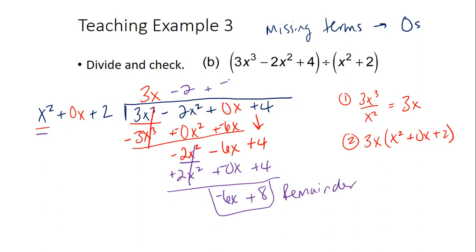So the remainder is written as plus negative 6X plus 8, all over X squared plus 2. And that is your quotient. That's long division. Questions, comments, concerns about long division — it is on the non-calculator part.